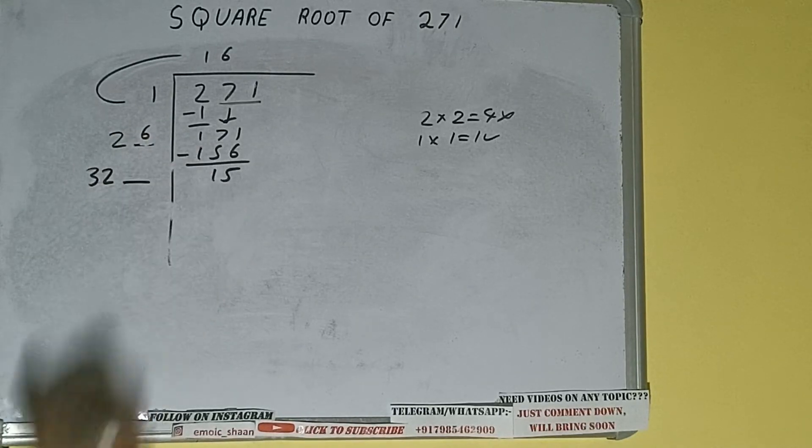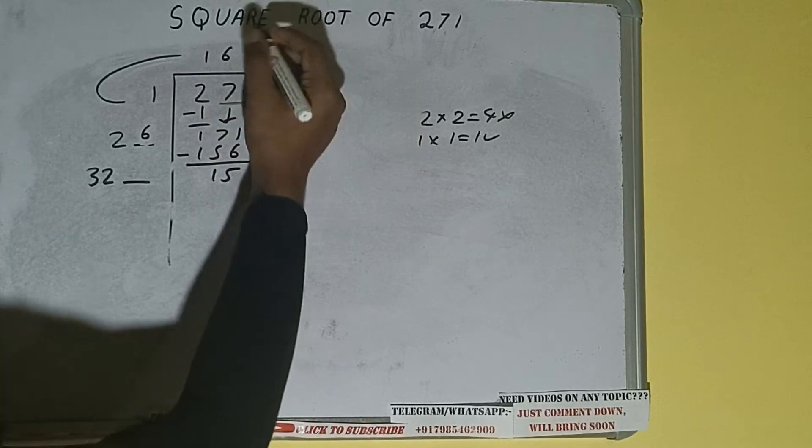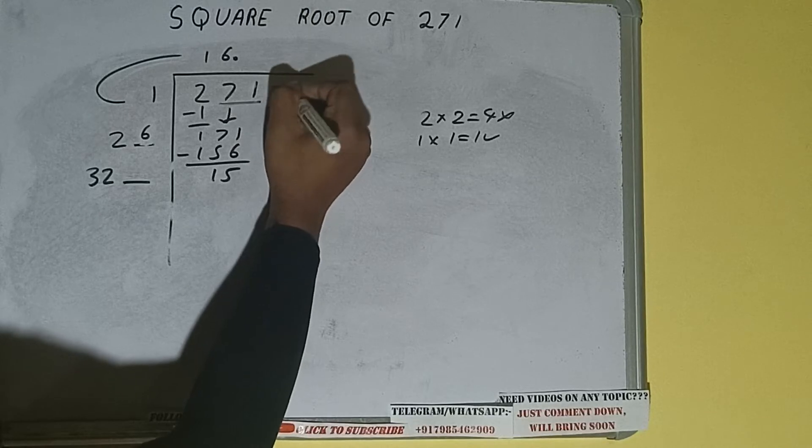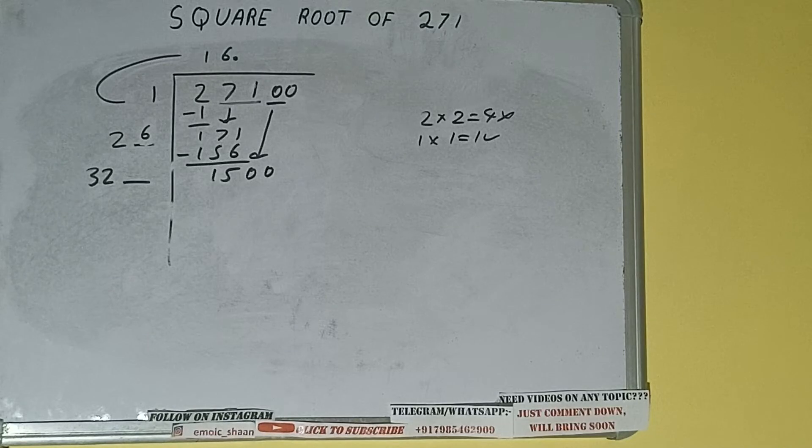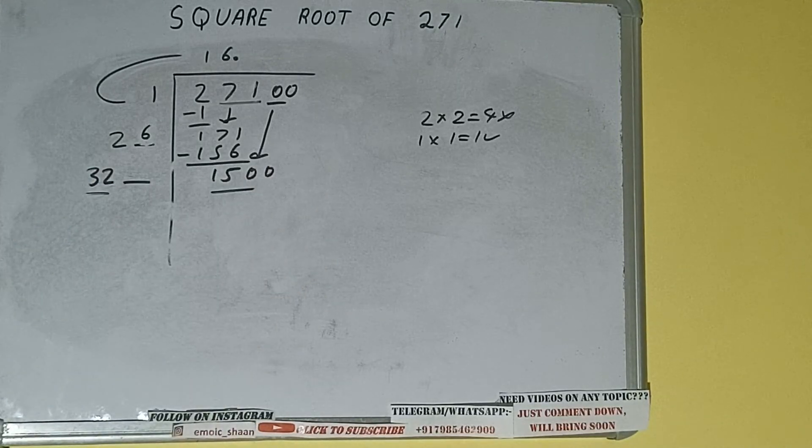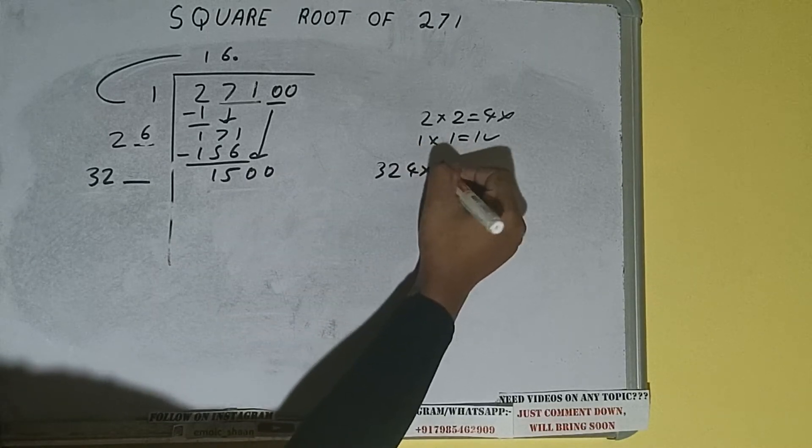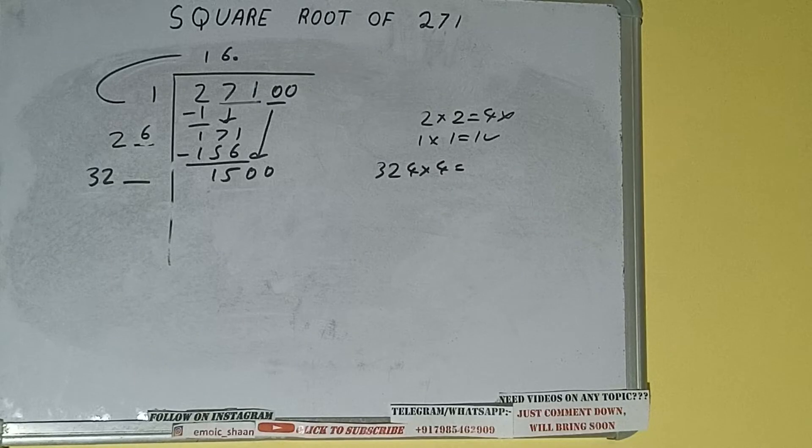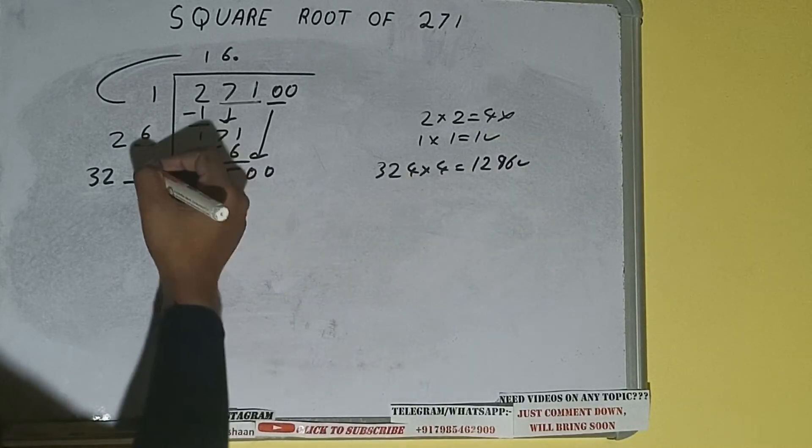Write it here and keep a digit extra, and this number we need to make it big, but we don't have more pairs so we'll put decimal. Once we put decimal we can bring pairs of zeros down and it will be 1500. Now compare this 32 with this 150. So 32 four times is 128, so we can try four times. 324 into 4 we can try.